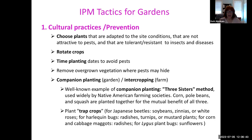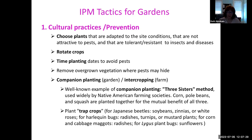Companion planting — it's called intercropping in farms because it's usually done in rows. The three sisters method has corn, pole beans, and squash planted together mutually helping each other. The pole beans are legumes, putting nitrogen into the soil. Trap crops are things that pests prefer over what you don't want them to eat. For Japanese beetles, you can plant soybeans, zinnias, or white roses. The idea is you're planting something they prefer to what you don't want them to eat.